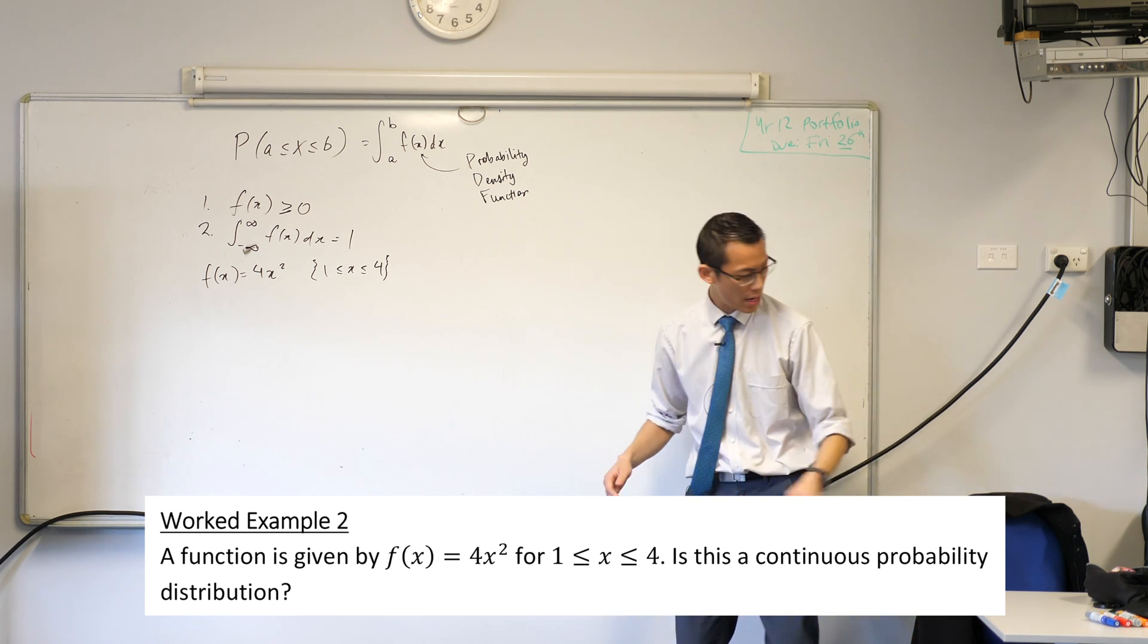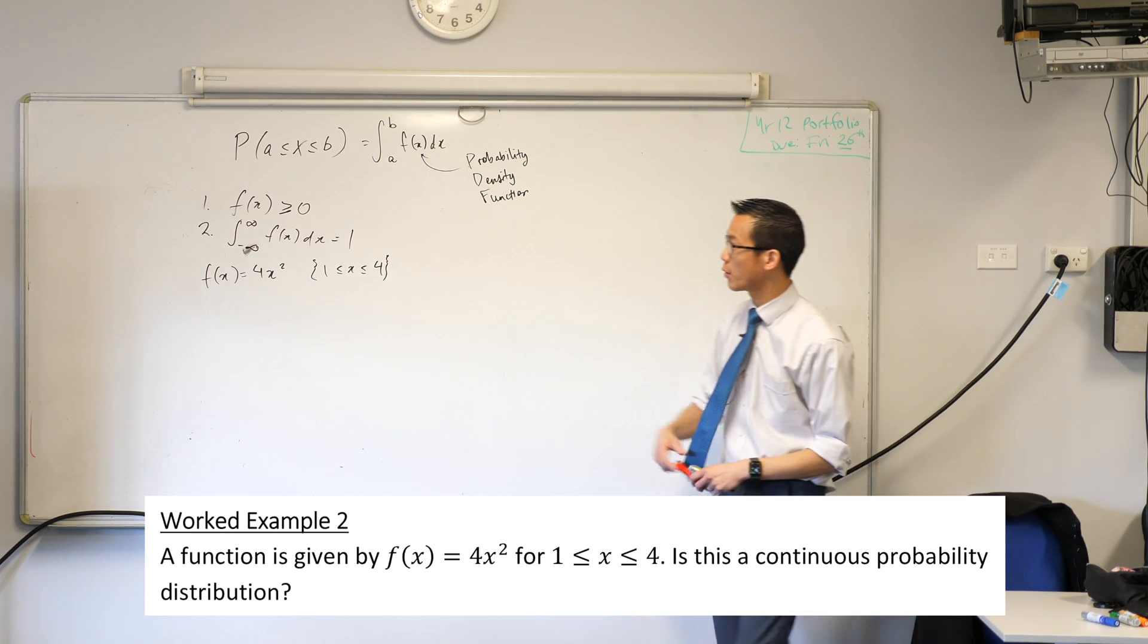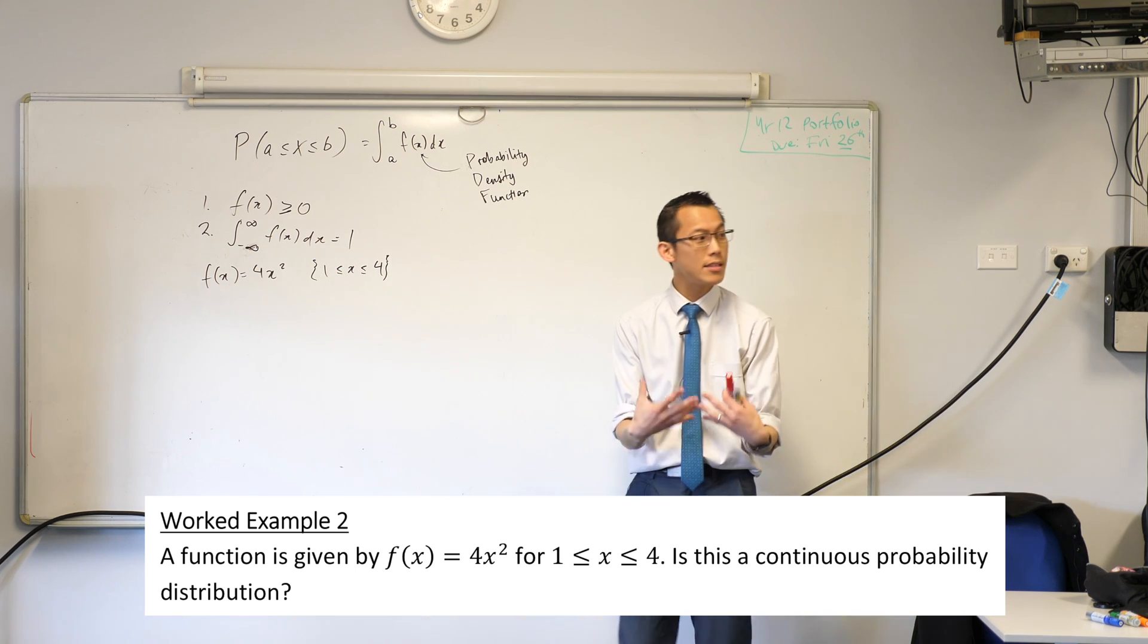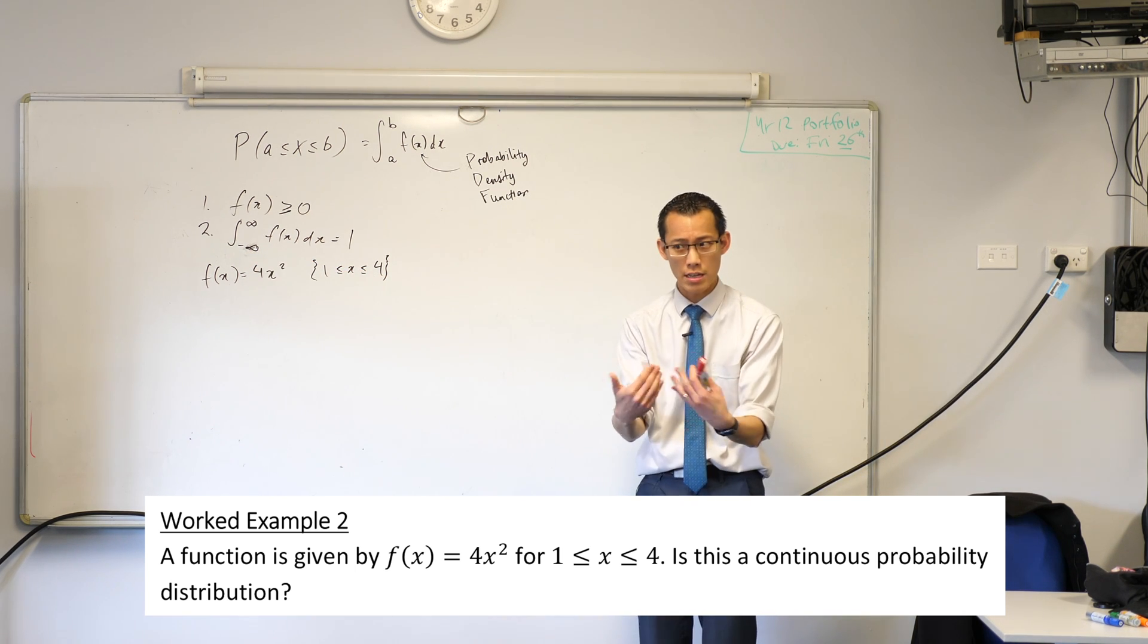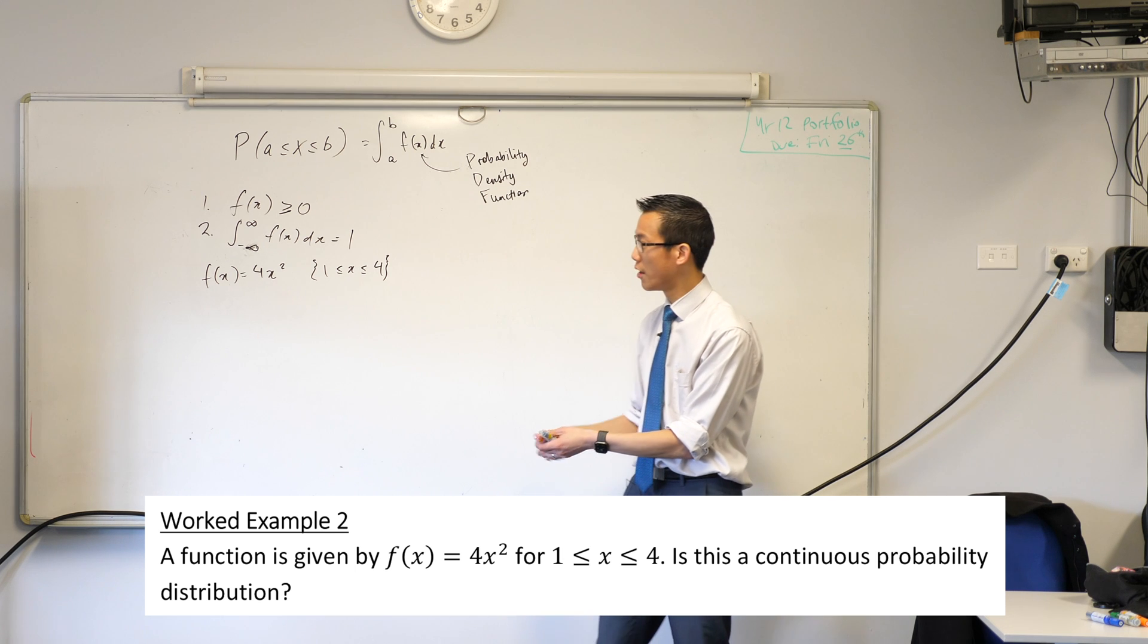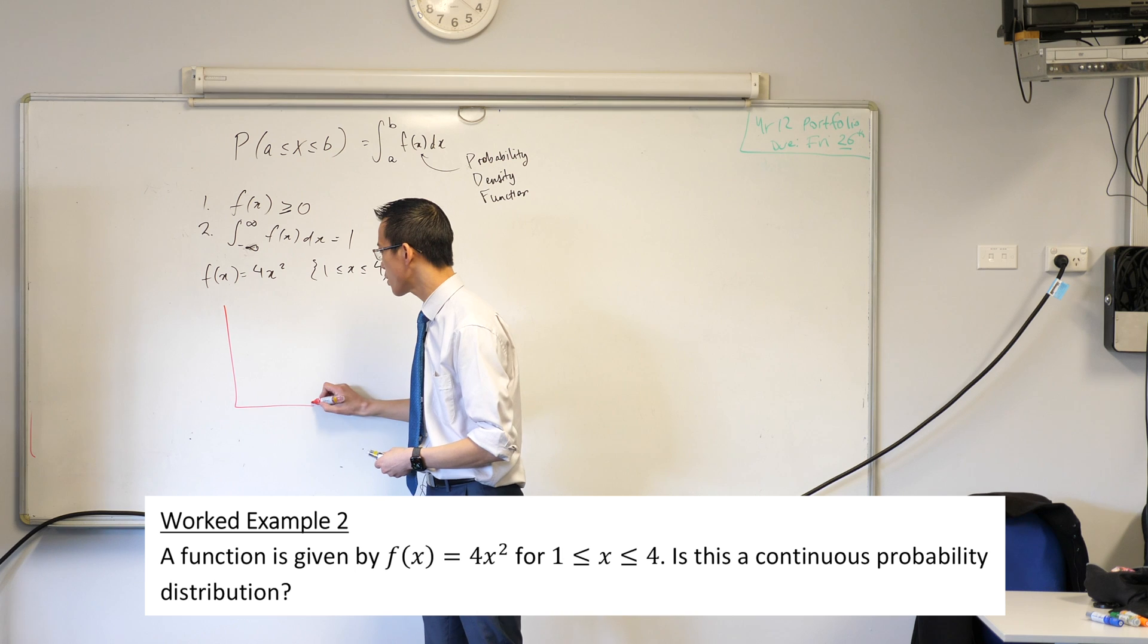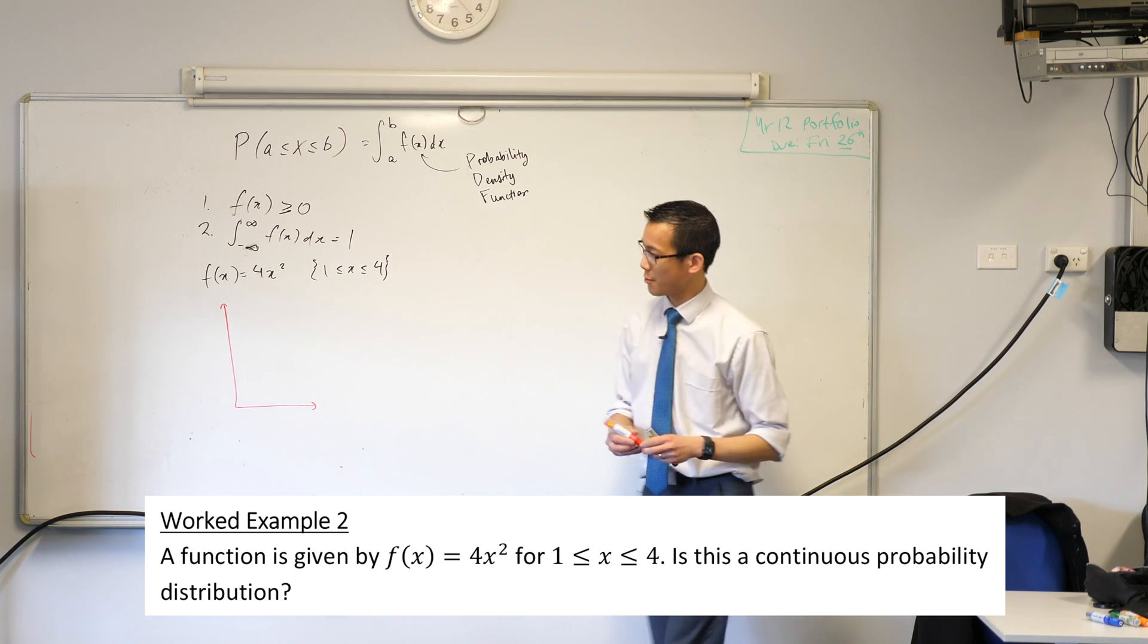So 4x squared, thankfully, is not a complicated looking function and when I think about this guy, is it greater than or equal to zero? I feel like the easiest way to prove to someone that it is or it isn't is to just draw the relevant part of the relevant function. So if you haven't already, draw yourself up a little set of axes.